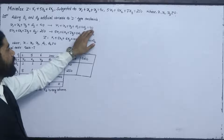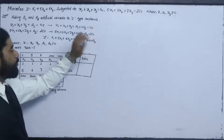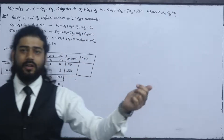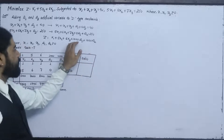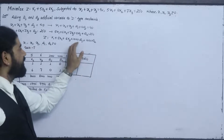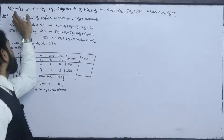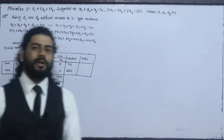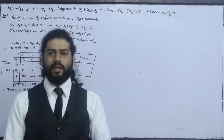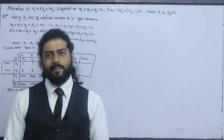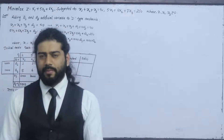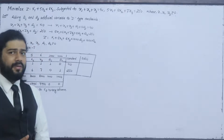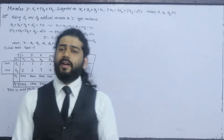We have 1000 (Big M) and 1000 plus values for the artificial variables. This is a maximization form — minus 7. We apply the standard form for this minimization question using the Big M method.